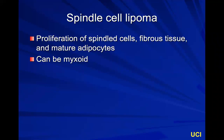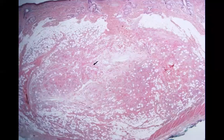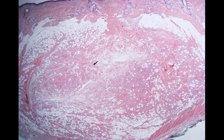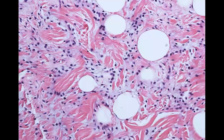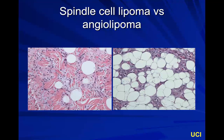A spindle cell lipoma has a proliferation of spindled cells with some fibrous tissue mixed among the mature adipocytes. It can also be myxoid. These spindled cells are of uncertain identity — possibly fibroblastic or precursors to adipocytes. CD34 would stain both. In the image, even though it's very cellular, you can see adipocytes scattered throughout hinting it's a fatty tumor. The spindled cells are not forming blood vessels, and the bluish background is the myxoid stroma. A side-by-side shows spindle cell lipoma versus angiolipoma, where cells are endothelial and form blood vessels.